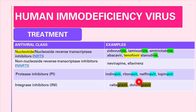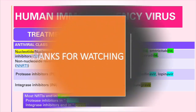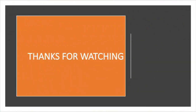Lastly, integrase inhibitors include raltegravir and dolutegravir. A useful naming convention: most NRTIs end in '-ine', most protease inhibitors end in '-navir', and most integrase inhibitors end in '-gravir'. There are also fusion inhibitors, which are an additional class not listed in the table.